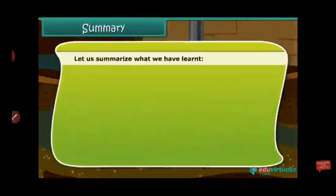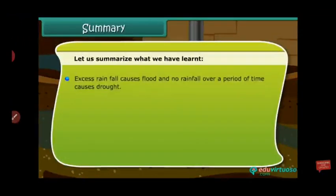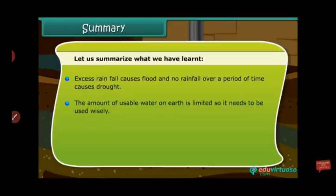Let us summarize what we have learnt. Excess rainfall causes flood, and no rainfall over a period of time causes drought. The amount of usable water on Earth is limited, so it needs to be used wisely. Collecting and storing rainwater is called rainwater harvesting.